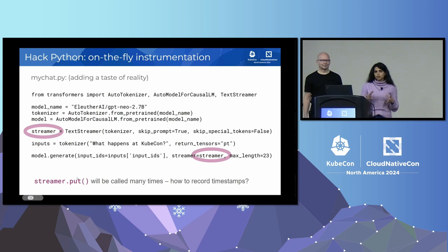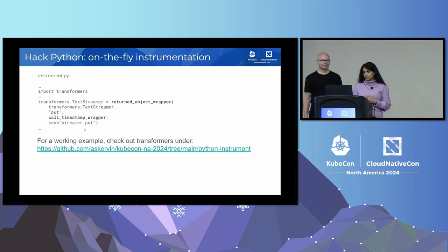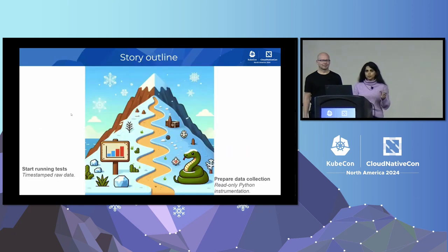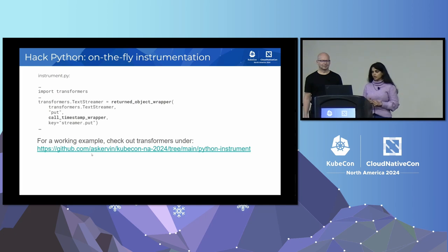What the put method does is: every time the model generates text, it calls the put method, which decodes whatever text the model has generated into a human-readable form. So for this decoded text, we are attaching timestamps, and we are passing this put as a parameter to this wrapper function, which makes sure that it adds the timestamps to the data — that's useful for our experiments. Here is a link to Antti's repository which has the complete code of this experiment, and Antti will talk about the test experiments and the results.